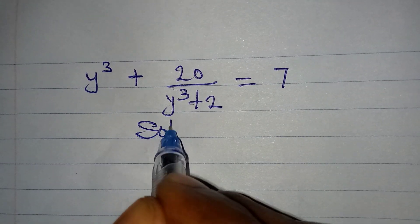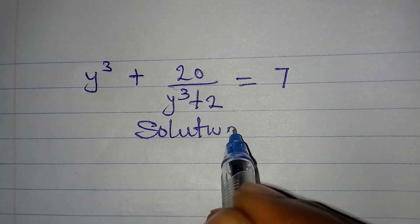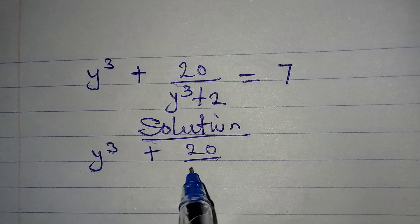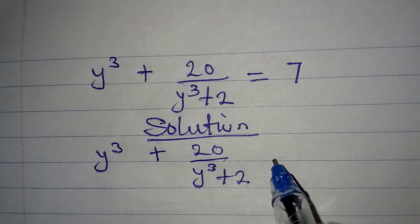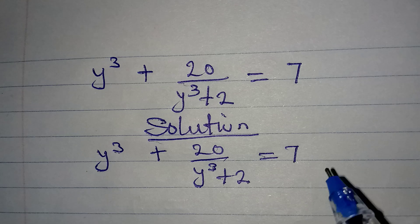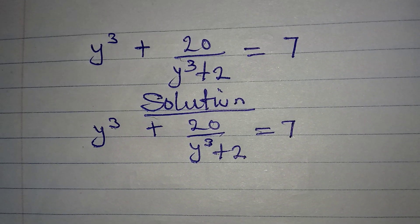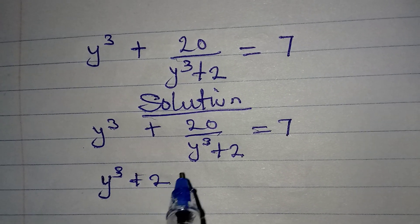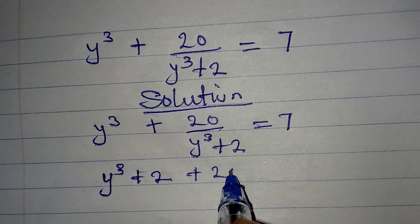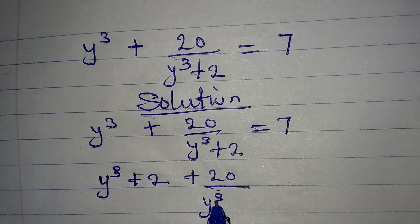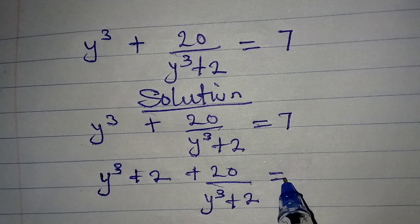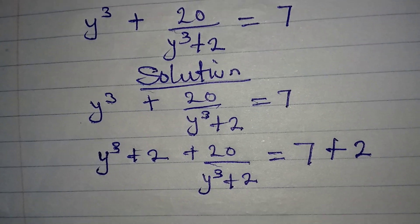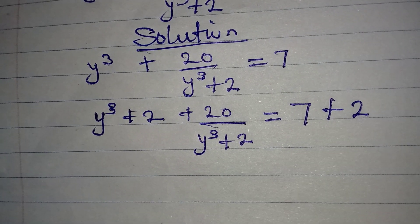Let us provide a solution to this Olympiad mathematics problem: y³ + 20 over (y³ + 2) equals 7. What I want to do is add 2 to both sides, so we have y³ + 2 plus 20 over (y³ + 2) equal to 7, and adding 2 to the right-hand side gives us everything equals 9.